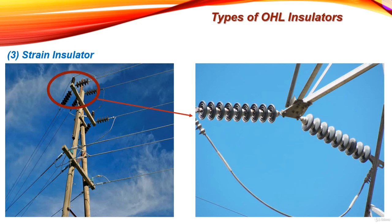Strain insulators are used at angle towers and at road crossings, and they are placed in a horizontal plane. If the tension in the conductor is very high, two or three strings of insulators can be used in parallel to withstand the high tension. Those are the three types of overhead line insulators — pin type, suspension type, and strain insulator — each suited to different voltage and mechanical conditions.